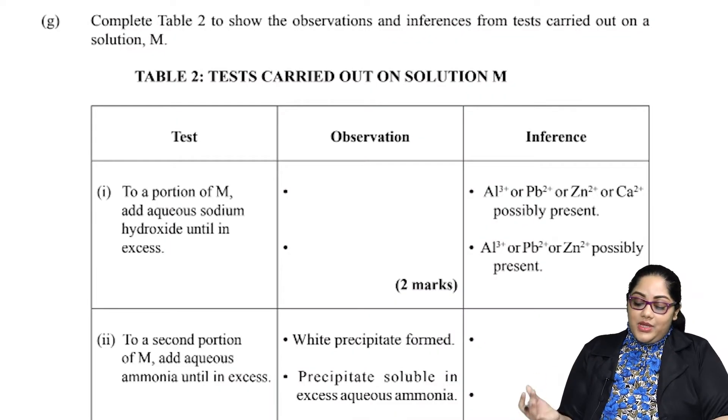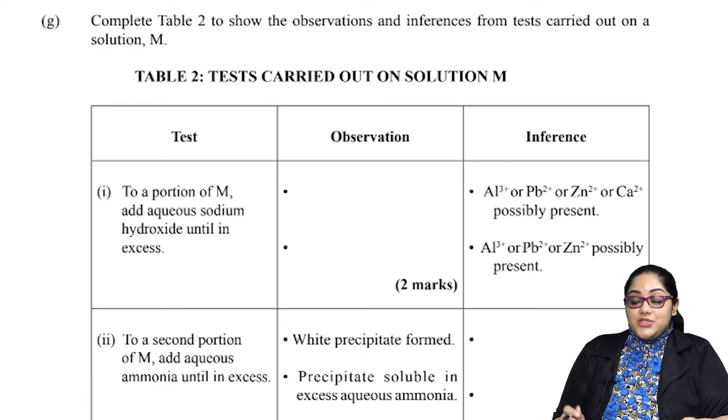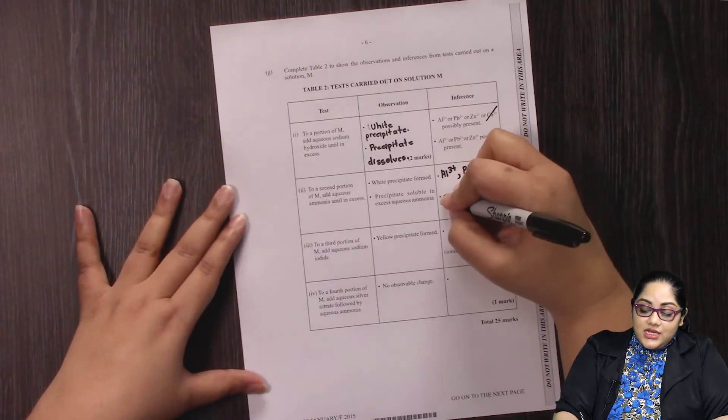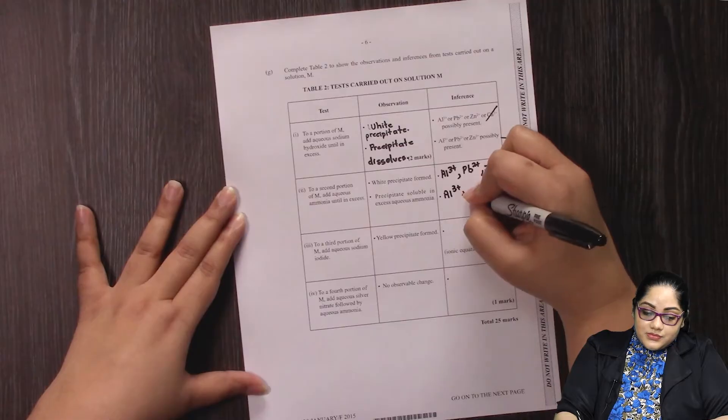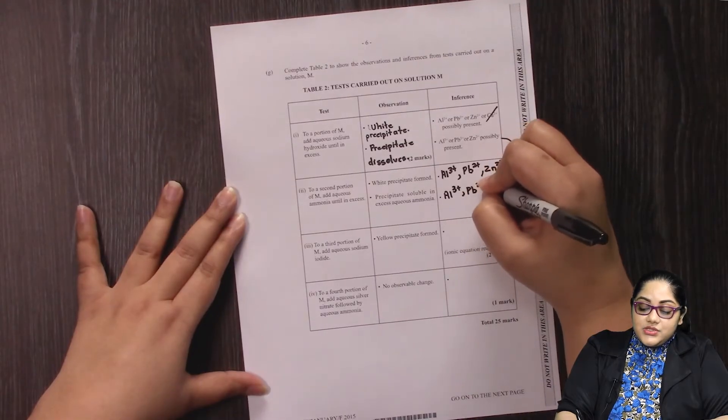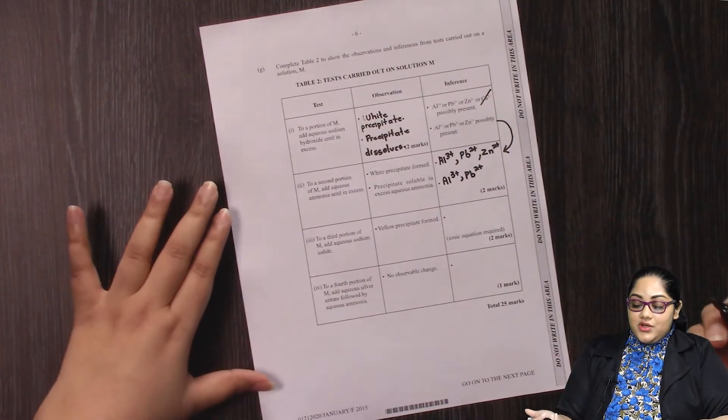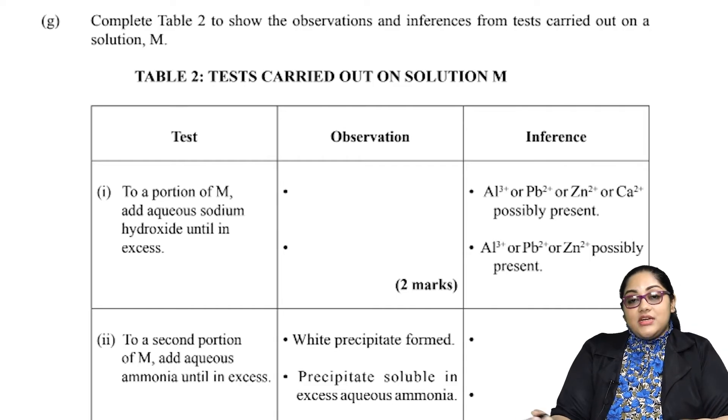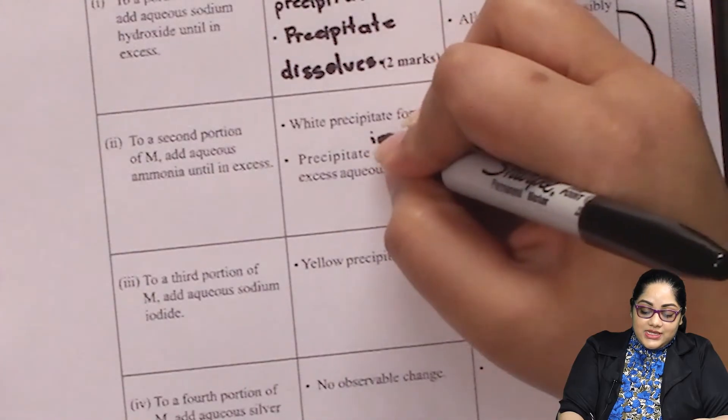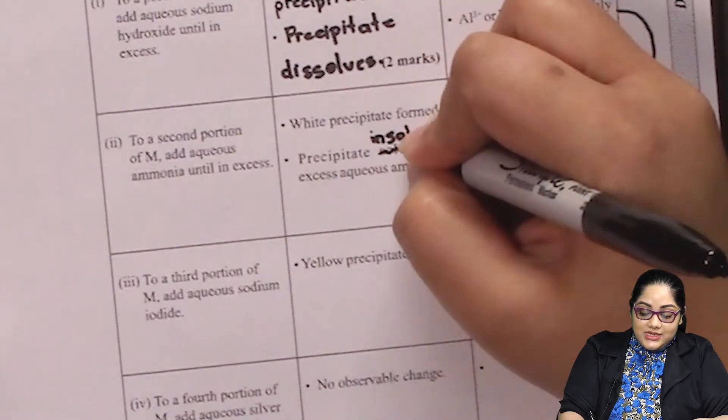The second part, when we add ammonia in excess, we have a soluble precipitate. So our options would be narrowed down to aluminum and lead. Those are the two ions that would be present because zinc is going to be soluble. The question actually stated a soluble precipitate, but you will notice that this part is supposed to actually say an insoluble precipitate in the question.